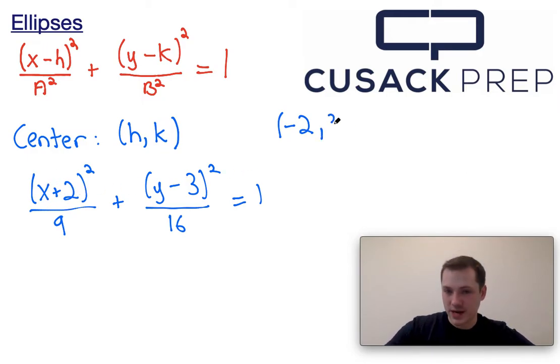k must be 3 because y minus 3, y minus k. The k and the 3 just align perfectly. So we know that the center of our graph is going to be at the point negative 2, 3. So I'm going to go ahead and just plot the center right there.